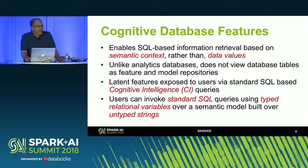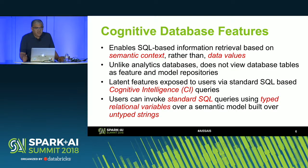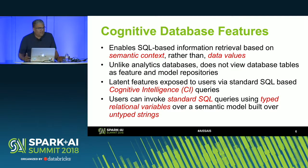The key property of the cognitive database — which separates it from traditional relational database models — is that retrieval is based on semantic context rather than data values. If you look at any existing SQL query, the WHERE predicate does comparison based on the value of the data type. In this case, we are not comparing data values but the context of a relational token captured by the word embedding model.